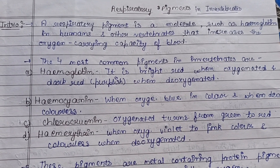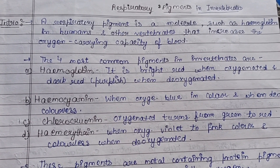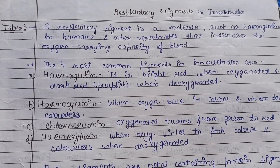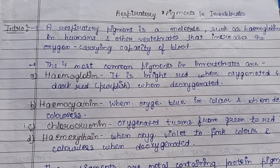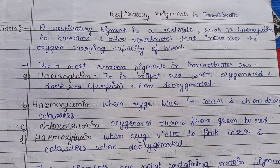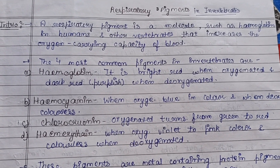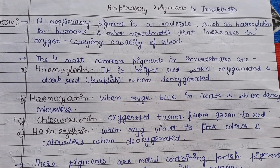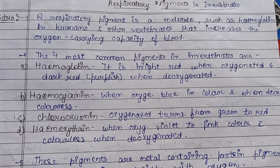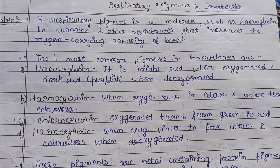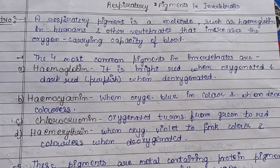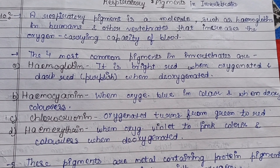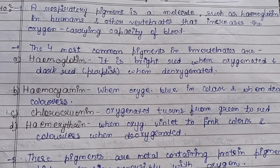The four most common pigments found in invertebrates are: hemoglobin, hemocyanin, chlorochronin, and hemoerythrin. Hemoglobin is bright red when oxygenated and dark red or purplish when deoxygenated. Hemocyanin is blue when oxygenated and colorless when deoxygenated. Chlorochronin turns from green to red when oxygenated — green is the deoxygenated state, red is the oxygenated state. Hemoerythrin is violet to pink when oxygenated and colorless when deoxygenated.